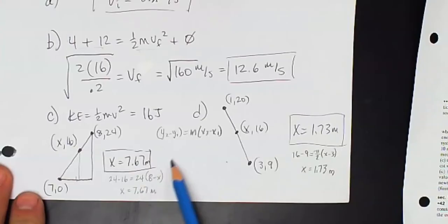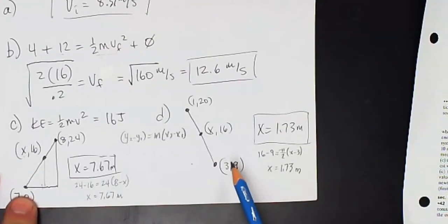So when I solve, plug in the numbers for the point-slope formula on the left side, I get 7.67 is my value for x.